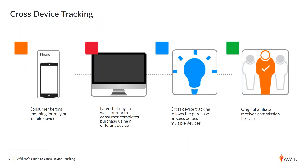Here's how cross-device tracking works. The consumer begins their shopping journey on a mobile device. Later that day, or later in the week or month, they go to a different device and complete the purchase. Through cross-device tracking we're able to follow that consumer from one device to another until their final purchase, ultimately meaning that the original affiliate received commission for the sale. They're the ones who got it started, and they're the ones who deserve the reward.